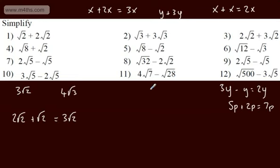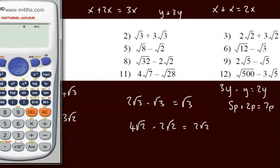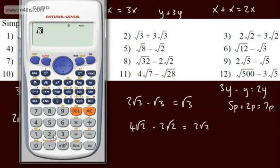Let's look at root 12 minus root 3. We can write root 12 as 2 root 3. So 2 root 3 minus root 3 gives 1 root 3. For root 32, we can write that as 4 root 2. So we'd have 4 root 2 minus 2 root 8, which is 4 root 2 minus 2 root 2, giving us 2 root 2. If you want to check on the calculator, root 32 gives 4 root 2, and subtracting 2 root 2 gives 2 root 2.